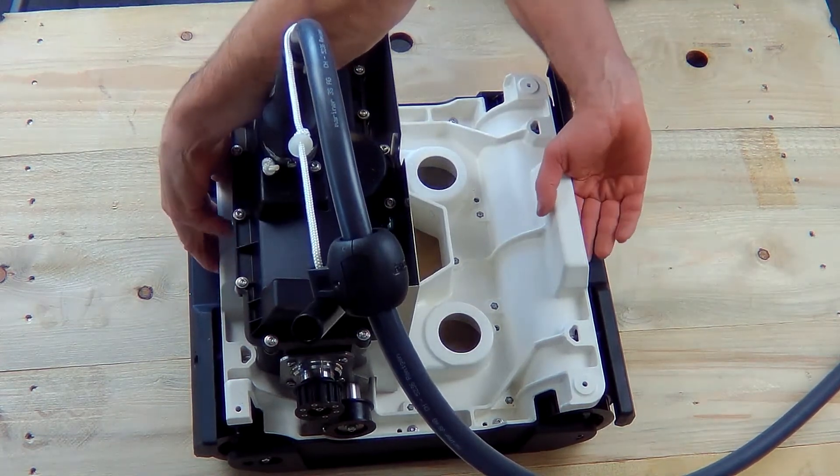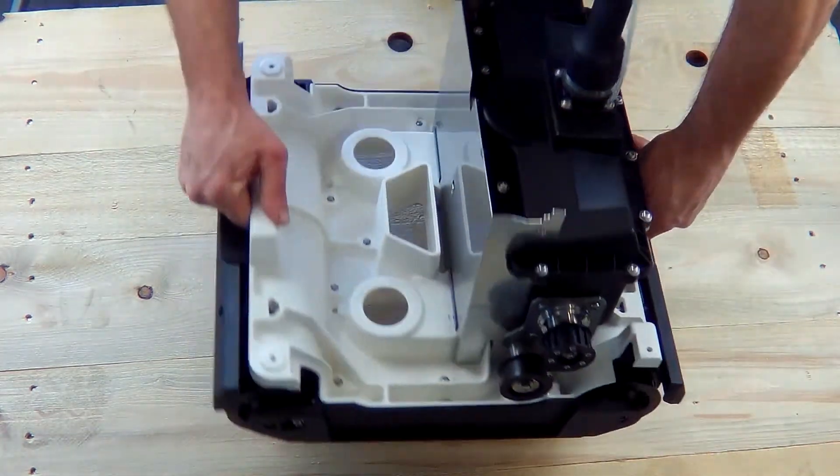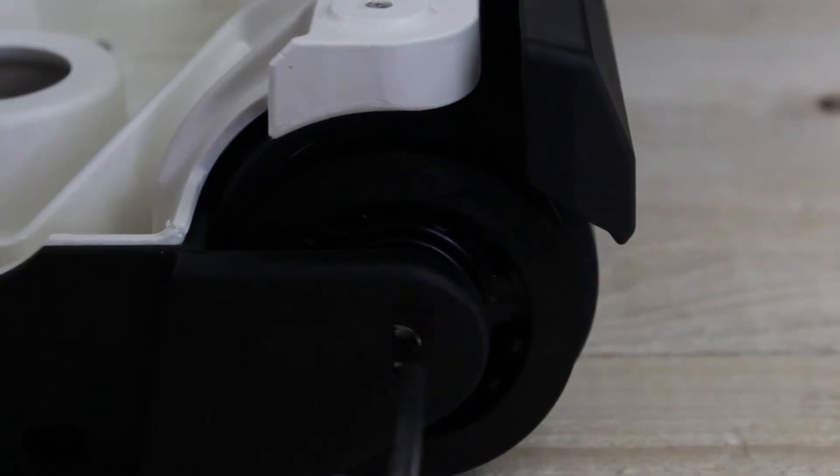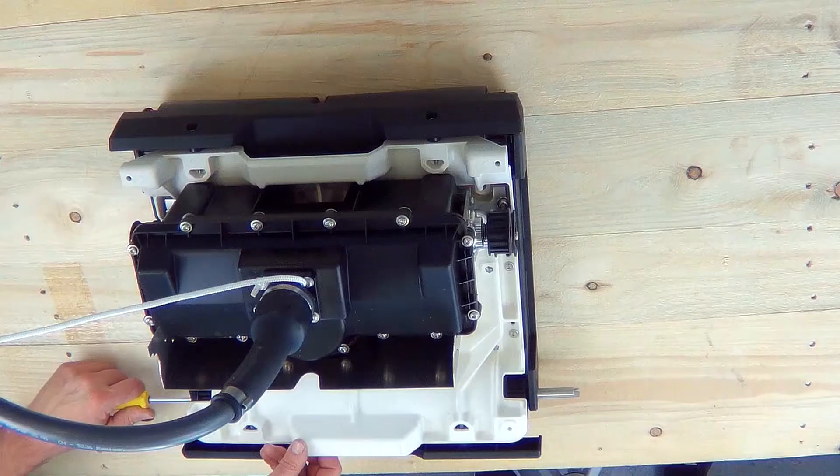To separate the rollers from the axle, we turn the device again. Now we use the screwdriver to push the axle out of the shaft that we have just unlocked on the other side.